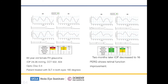What you can see on the left side here is her initial or pre-treatment pattern ERG, and you can see some abnormalities in both the left eye and the right eye. We elected to treat this patient with SLT, and you can see on the right here two months later the IOP has now decreased to 16 in both eyes, and you can see an improvement of the PERG which shows improvement of the retinal ganglion cell function.